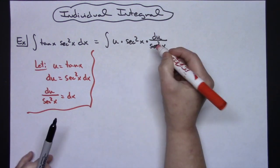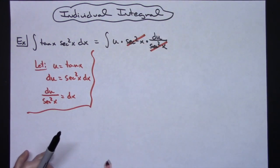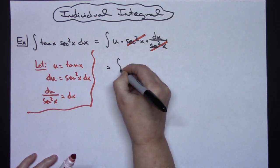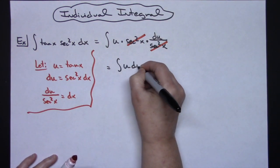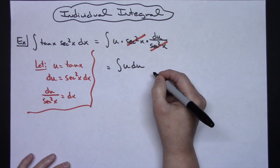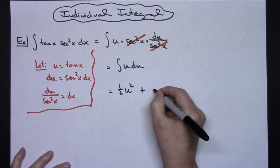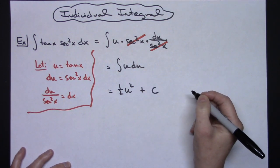Now hopefully then that lets you see that those secant squared x is easily canceled out. That's going to give us then just a simple integral of u du, which is a nice straight integration here. So we'll make that a u squared and put the one half in front with our plus c because we've completely integrated.